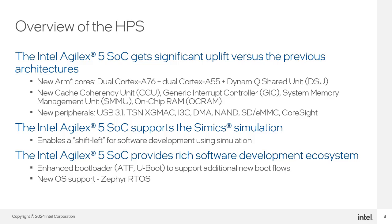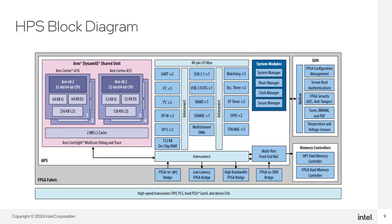The processor features a superscalar, variable-length, out-of-order pipeline with dynamic branch prediction, an improved ARM NEON media processing engine, single and double precision floating-point unit, and ARM CoreSight debug and trace technology. The Cortex-A53 core supports high-performance applications and provides capability for secure processing and virtualization.